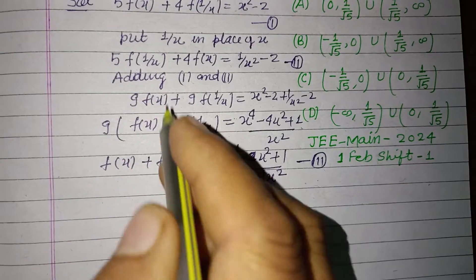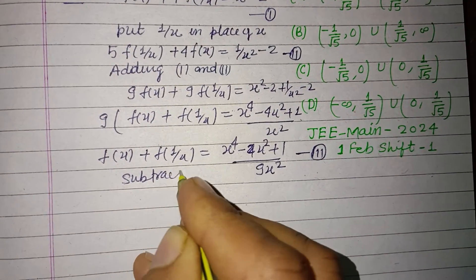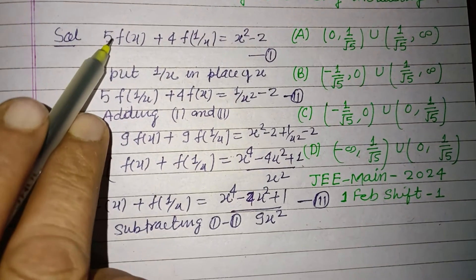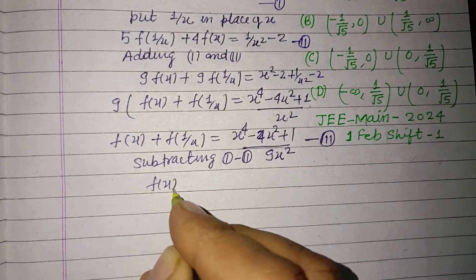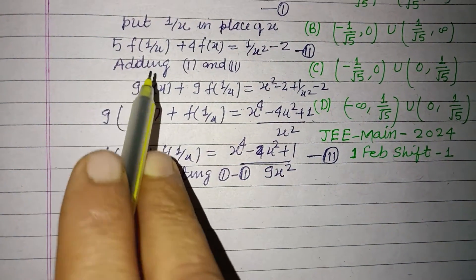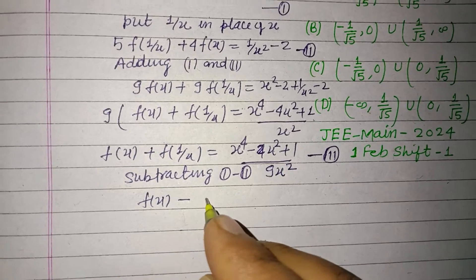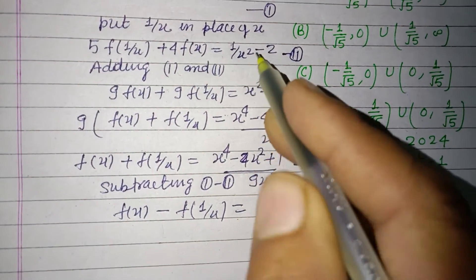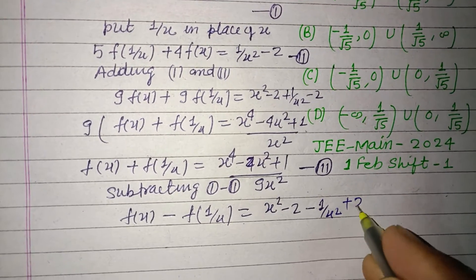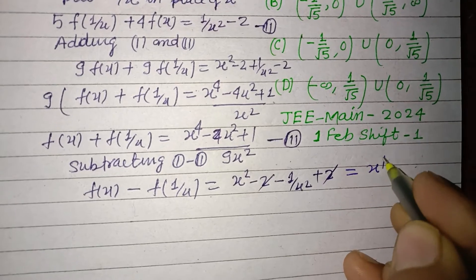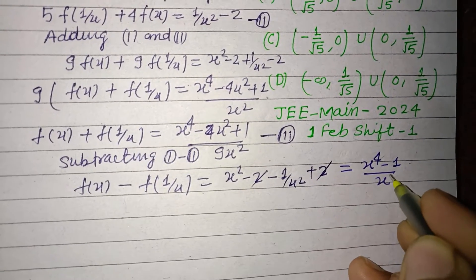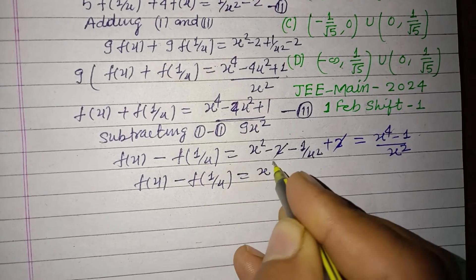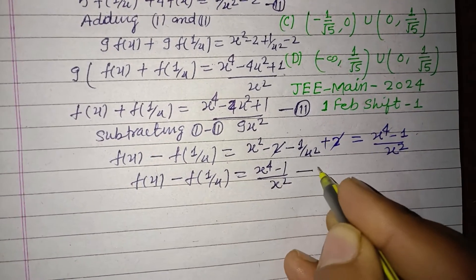Now subtract both equations — subtracting first minus second. When we subtract, 5f(x) - 4f(x) gives fx, and 4f(1/x) - 5f(1/x) gives -f(1/x), equal to x² - 2 - (1/x² - 2), which simplifies to x² - 1/x². So f(x) - f(1/x) = (x⁴ - 1) / x². This is our fourth equation.